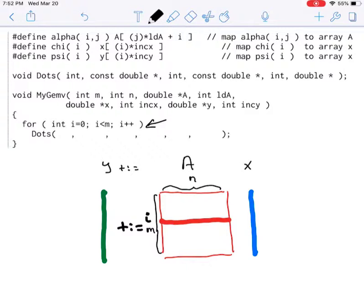And the question now is what parameters to pass in to the dot product. The first parameter in the dot product is the size of the vectors with which you're going to perform a dot product. And notice that in this particular case, that's n.